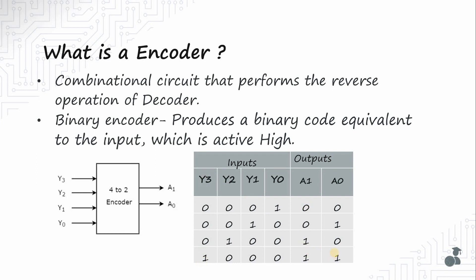We can represent this using gates also. So a1 is high only when either y2 or y3 are high. So y2 or y3 will be a1. And a0 is high only when y1 or y3 are high. So a0 is y1 or y3.